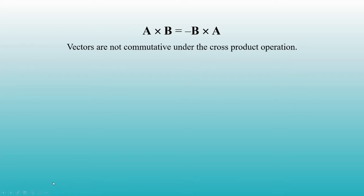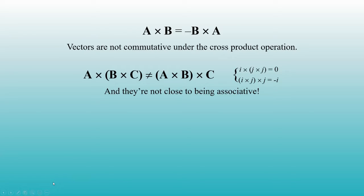The cross product, it turns out, does not even come close to obeying the associative property. You can see this for yourself by considering i cross j cross j. If you do the j cross j first, you get zero, and i cross zero equals zero. But if you do the i cross j first, i cross j equals k, and k cross j equals negative i. Not the same.